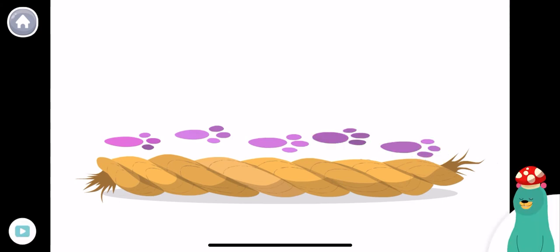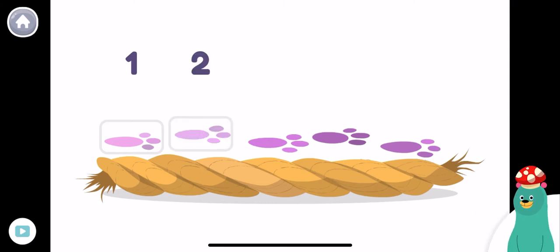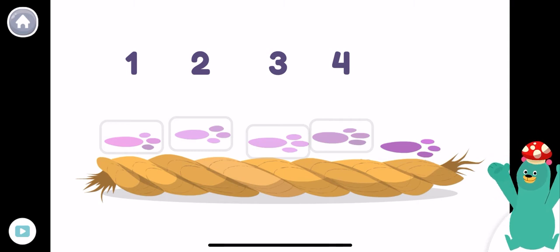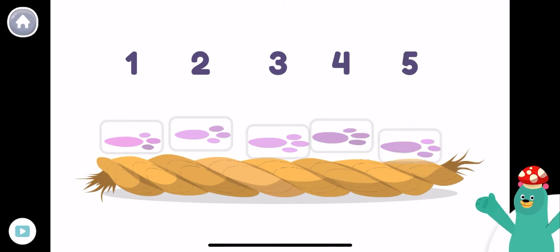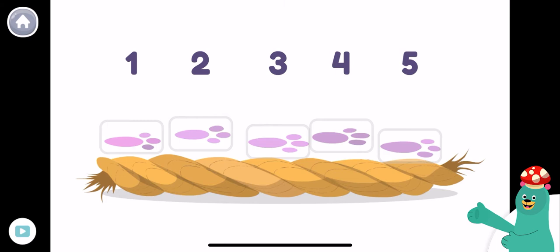Let's count the paw prints. Tap them. One, two, three, four, five! The rope is as long as five paw prints.